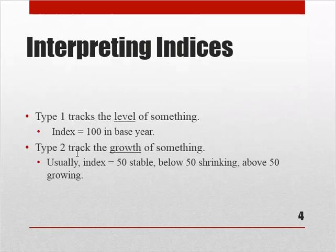The other type of index is more often used to track the growth of something. In this case, what's usually done is: if something is the same as it was last year or last month, we call that an index value of 50. If it's below what it was in the recent reference period — last year, last month, etc. — that indicates the variable is shrinking. If it's above 50, then it's growing.